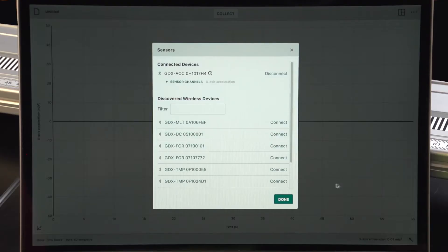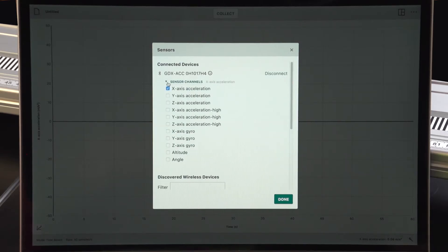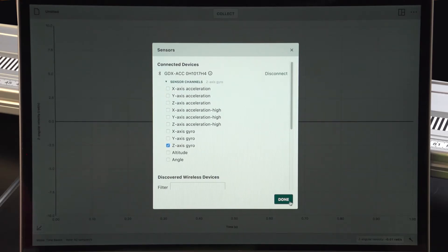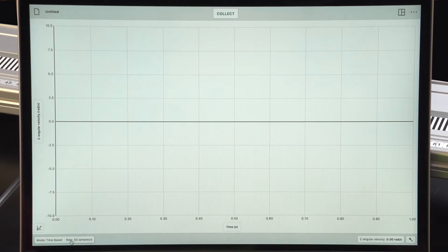So in this case, when I choose sensor channels, I'm going to choose the z-axis gyroscope. I'm also going to adjust the time for this experiment, but not the data collection rate. 15 seconds is plenty for this experiment.